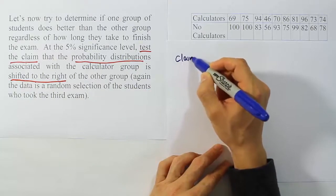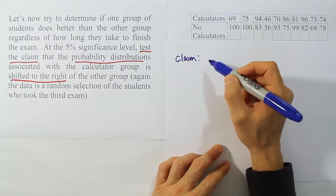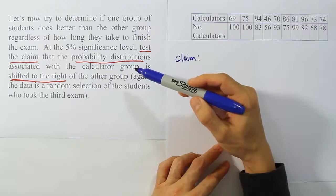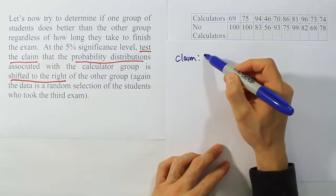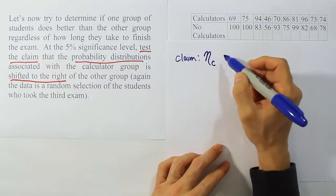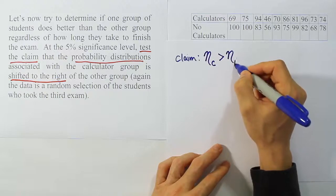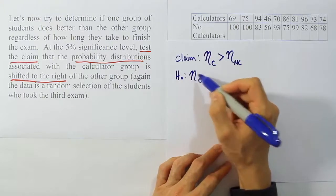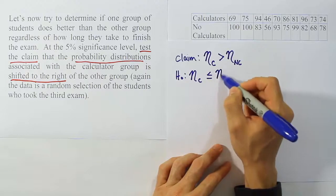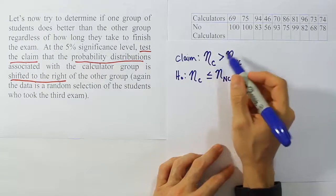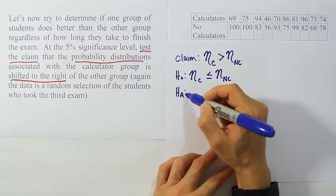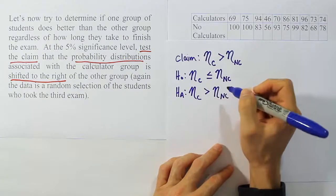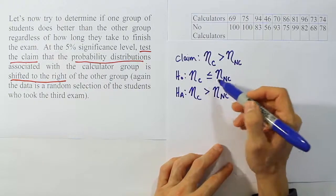The hint that we're going to use that technique as opposed to say the independent t-test is that they ask us to test if the probability distributions are shifted, if the calculator group is shifted to the right of the other group. And that's typical language you find in Wilcoxon rank sum. It also uses the language that you see in non-parametric procedures as a whole. So let's go ahead and talk about the claim then. Again, if I want to discuss the medians here, I would want to say that the median for the calculator group is greater than the median for the non-calculator group because that's what this is saying. So we'd say that basically eta for the calculator group is greater than the median or eta for the no calculator group. So that's the notation.